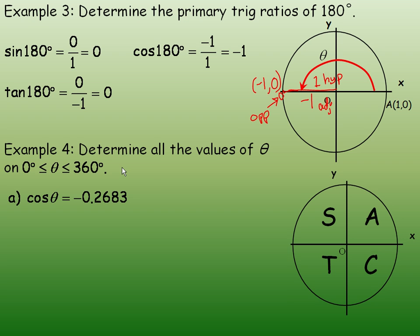Now in example 4, we're asked to determine all the values of theta on 0 to 360, and there's a diagram here. We've investigated the different trig ratios and their signs. What these four letters stand for is called the CAST rule — C, A, S, T. All the trig ratios are positive in the first quadrant. Sine is the only trig ratio positive in the second quadrant. Cosine is the only trig ratio positive in the fourth quadrant. And tan is the only trig ratio positive in quadrant 3. They tell you which trig ratios are positive in each of the quadrants.